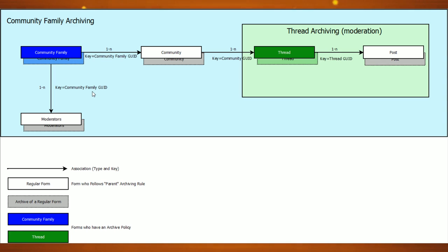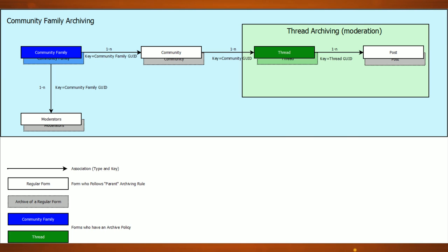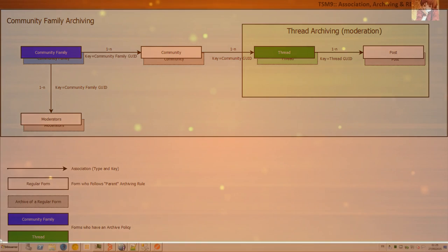From the community family to the moderators the key is also the community family grid. If you want more information about associations you should check the DocWiki. So basically what is an association? It's a new object in ITSM, in ARS. You can declare it pretty much like you were declaring an active link or a filter - an association between two forms.